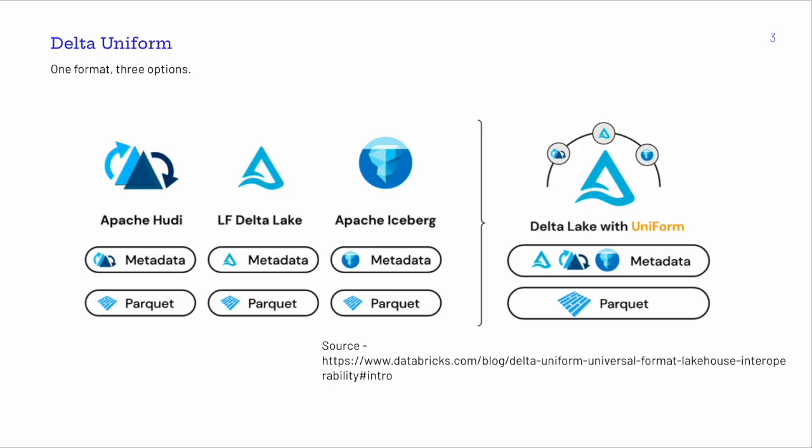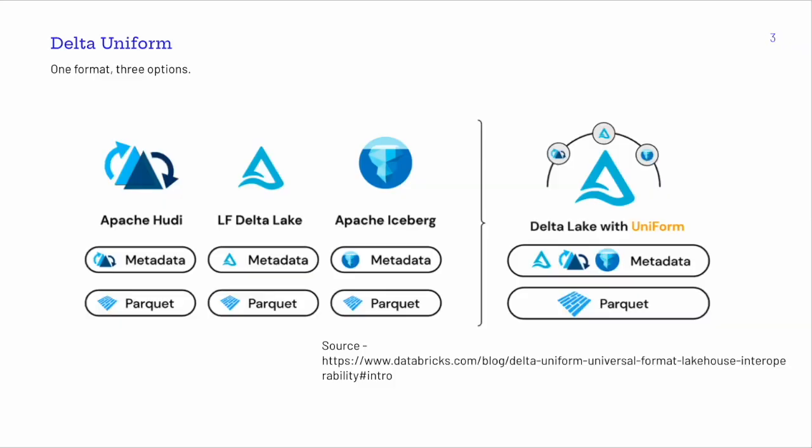Here's a visual from the Delta Lake blog. The idea is you have Delta Lake with UniForm and one single copy of the data — not three different copies, which matters because these tables can get quite large. You have one copy of the Parquet files, then metadata for Iceberg or Hudi that allows your Delta Lake table to act like an Iceberg or Hudi table if you want. That means you could read and write to that Delta Lake table as if it's an Iceberg table — useful for migrations where you have mixed formats and don't want to change all your readers and writers in your Spark code right away.